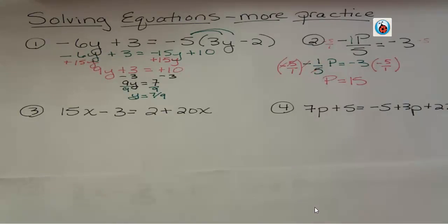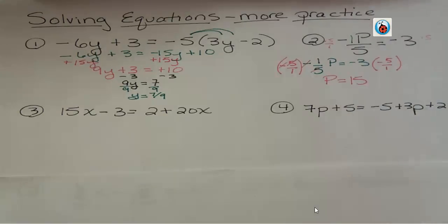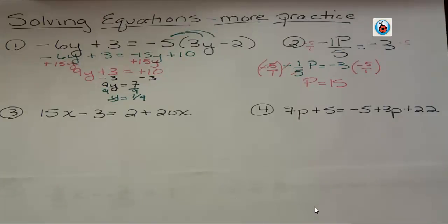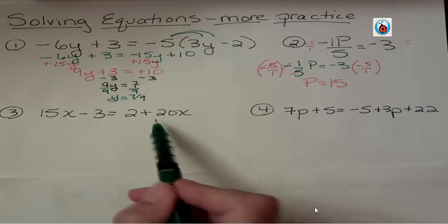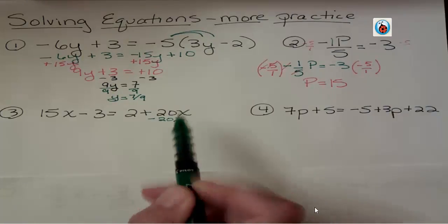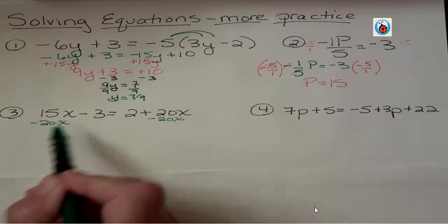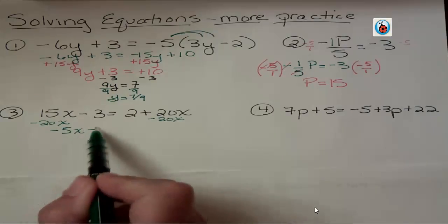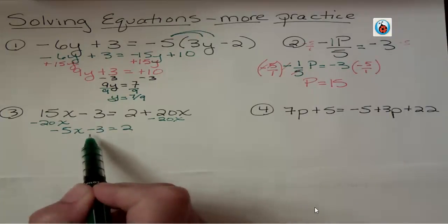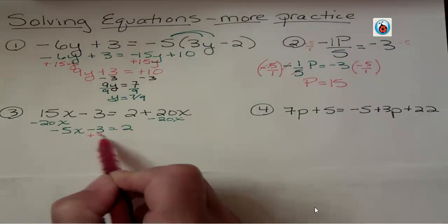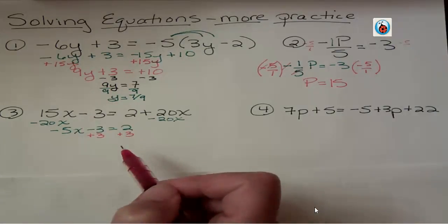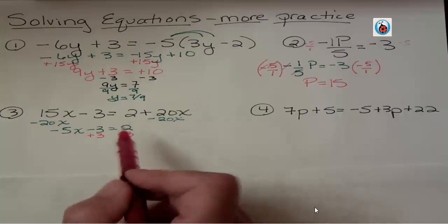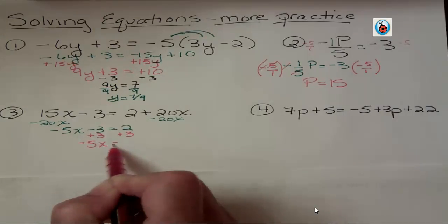In problem number 3, we don't have to distribute and we don't have any fraction, so it should be a little easier. If I want to move the variable terms together, I can get rid of positive 20x by subtracting 20x. You should be testing your own skills by trying these on your own. If I have 15 and take away 20, I have negative 5x. I add 3 to both sides because I want the variable terms on one side and constant terms on the other. Does it always have to be left for variable, right for constant? No. That's just how I do it for consistency.